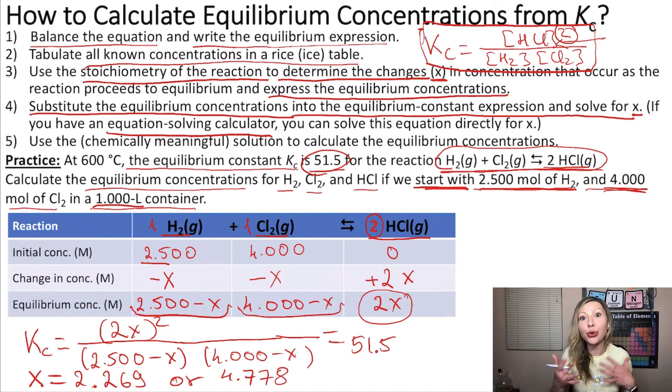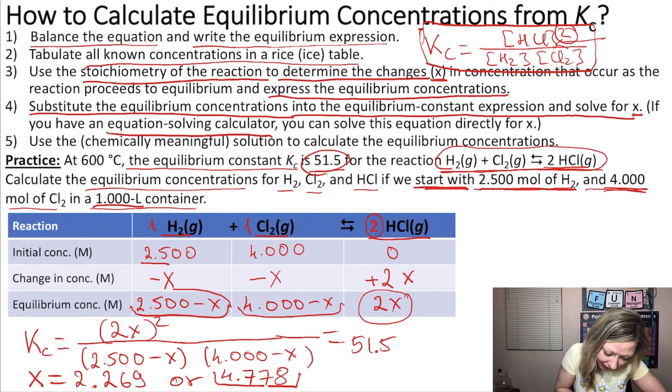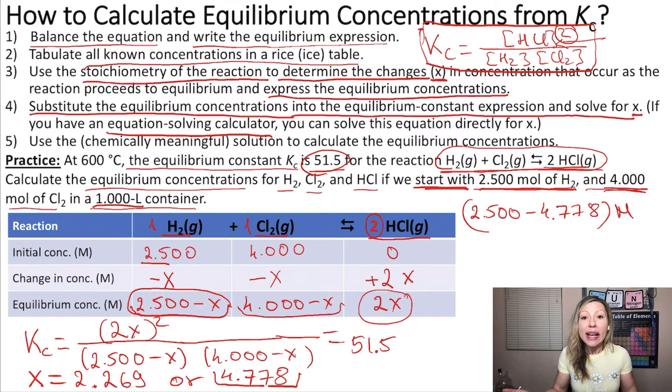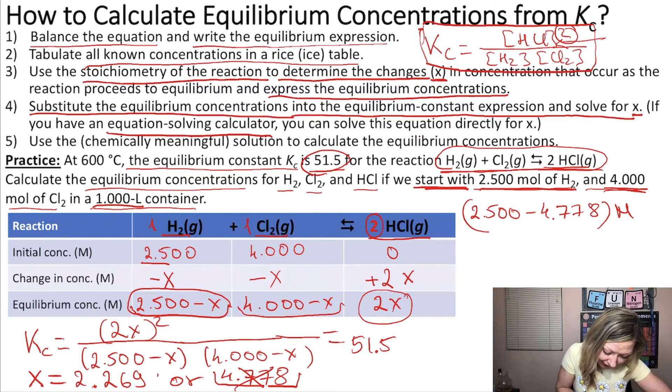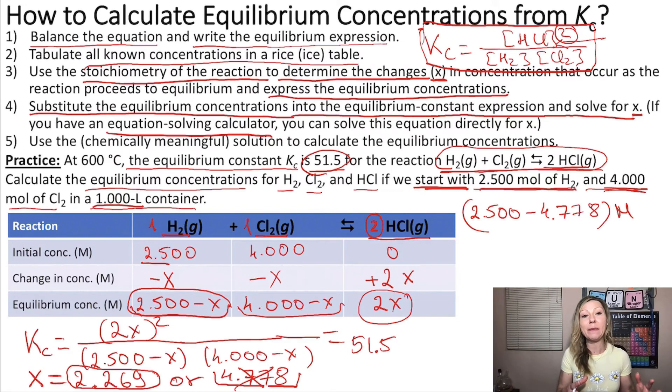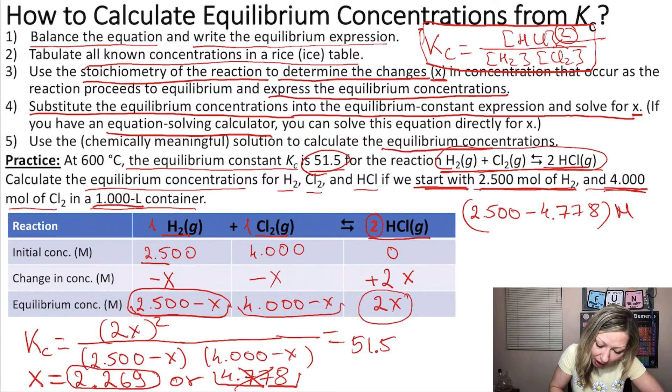And now we have to think about which root makes actual sense. So let's say that if we use 4.778 as our solution for X, and then I want to calculate the equilibrium concentration for H2 right here, then I would do 2.500 minus 4.778. These are all molarities. I would get a negative volume. Can I have negative concentrations? No, I cannot. So this solution has no real chemical meaning. So I can just simply forget about that. So the solution for X is 2.269. So we figured this out. Now we can use this X to actually calculate the equilibrium concentrations that we were asked to do. And I'm going to do that on the next slide.